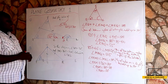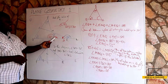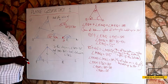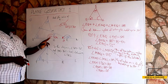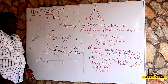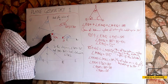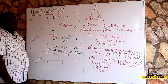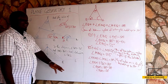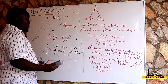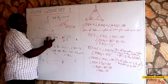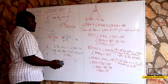Now this angle plus this angle plus X gives us 180. We can say angle X plus 50 plus 125 equals 180, using the sum of interior angles of a triangle.